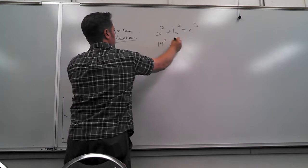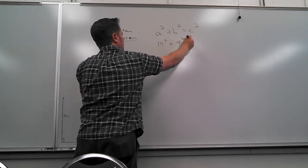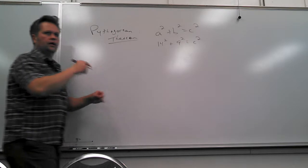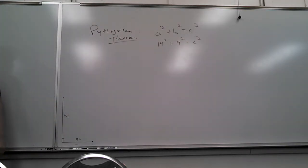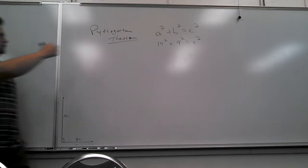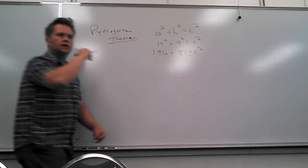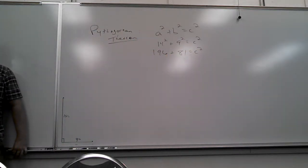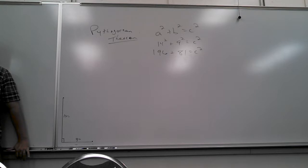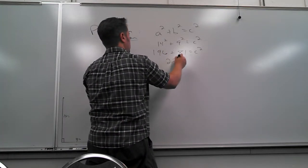14 squared plus 9 squared. So 14 squared is 196, and 9 squared is 81. So 196 plus 81 is 277. You're not going to have to actually construct your own triangle in the homework. But if I'm you, I kind of get tired of talking about just math theory — I want to see the thing actually make something. Math can do that. 277 equals C squared.